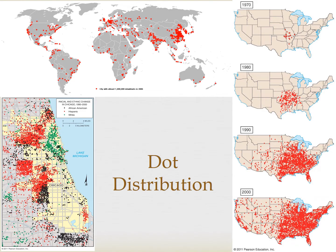Dot distribution or dot density maps, as the name implies, will show the distribution or, more specifically, the density of one attribute. This can be very helpful in doing geographical analysis, but it can also be very difficult to collect this data. All of the dots have to be fixed to a specific point — we call that point data. They can't just be thrown randomly on the map. Tools like GPS are often used to help collect and map this data. It's not uncommon for dot distribution maps to have no key.